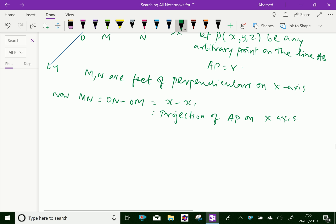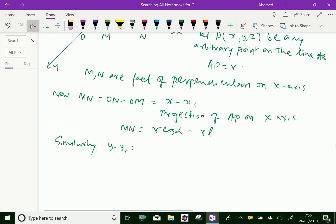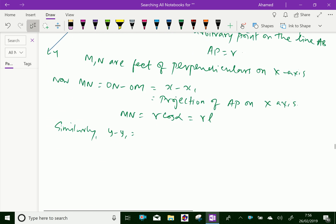Similarly, we can write that MN equals R cos alpha, that is RL. Similarly, Y minus Y1 is the projection of the line AP on Y-axis, therefore we can write this is RM, where M is cos beta.